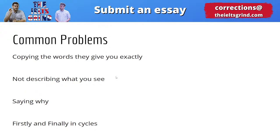Here are common problems when describing a process. First, a really common mistake is that students copy the words the diagram gives you. The diagram will often use high-level vocabulary naming the steps — for example, if it's a process about growing fruit trees, there might be a step where someone is cutting branches and underneath it says 'pruning,' or 'hydrating,' or 'pulping' for a recycling process. You can use those words, but if you use them exactly as you see them, they do not count towards your vocabulary score or your 150 words.